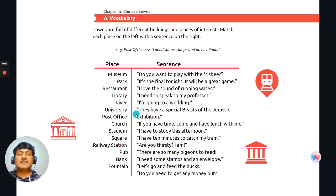The next one, I'm going to a wedding. So someone could be going for a friend or family member's wedding. And the next sentence, they have a special beast of the Jurassic exhibition. Okay, if you have time, come and have lunch with me. So someone's inviting someone out to lunch. I have to study this afternoon. I have 10 minutes to catch my train. So this person better get running. The next one, are you thirsty? I am. So someone needs a drink of water. There are so many pigeons to feed. This person is probably a bird lover and they are so kind that they are bringing food to feed the pigeons.